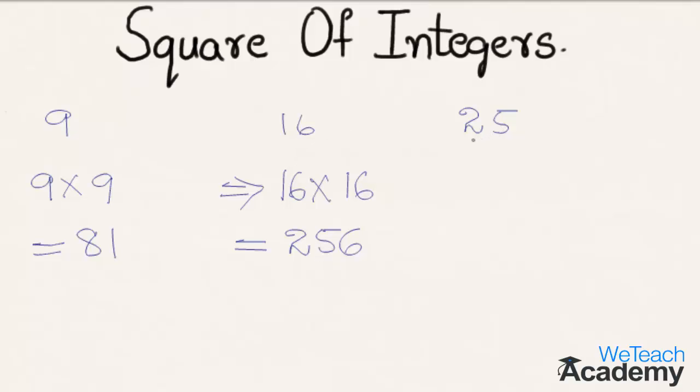Now let us consider another integer, 25. Square of 25, that is 25 into 25, equals 625. So 625 is the square of 25, and square root of 625 is 25.